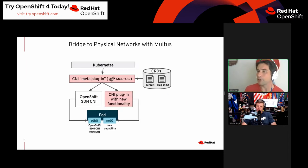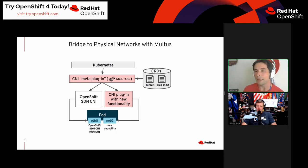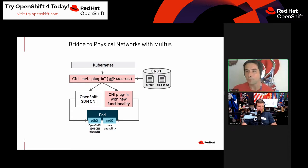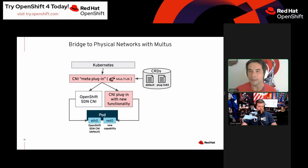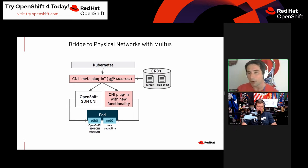Another option is multiple interface networking using Multus, where you can actually attach a virtual machine directly to your physical network. This allows you to get traffic that isn't HTTP or HTTPS into your virtual machines. If you need to PXE boot a virtual machine off a PXE server, this is how you would go about doing that.